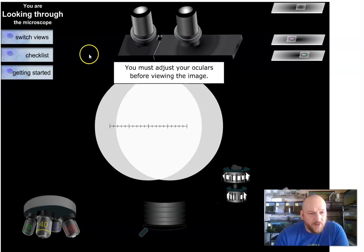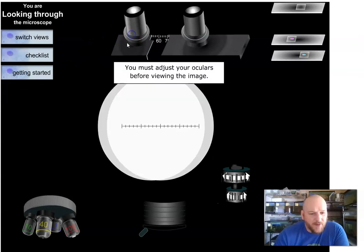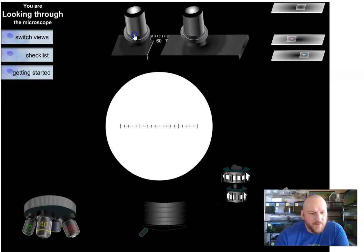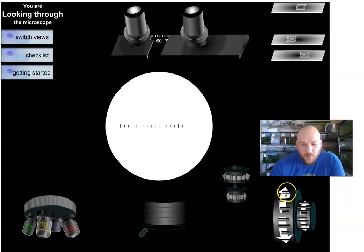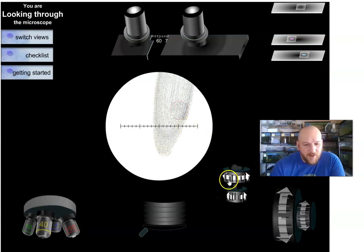We have to adjust the oculars here so we'll bring them apart to bring the image together. A little too far. Bring our image together and then from here, I'll move out of the way, we need to focus our scope. So we'll click on the button here to see if we get an image into focus. It's like nothing there, let's go the other direction. Ah there it was and there we have our onion root.